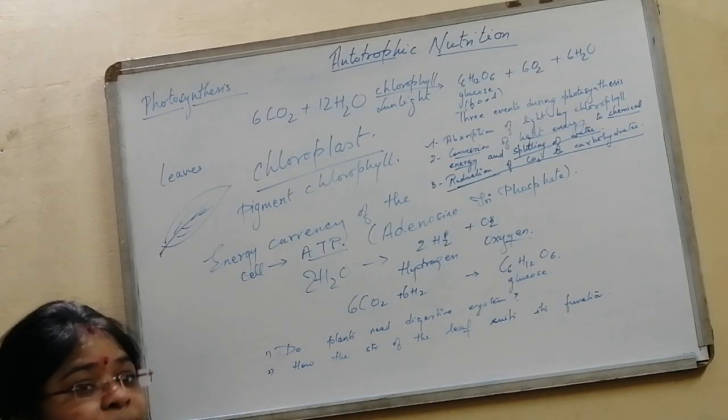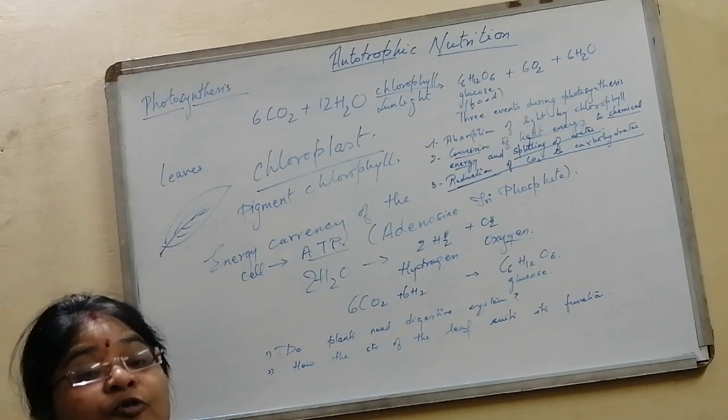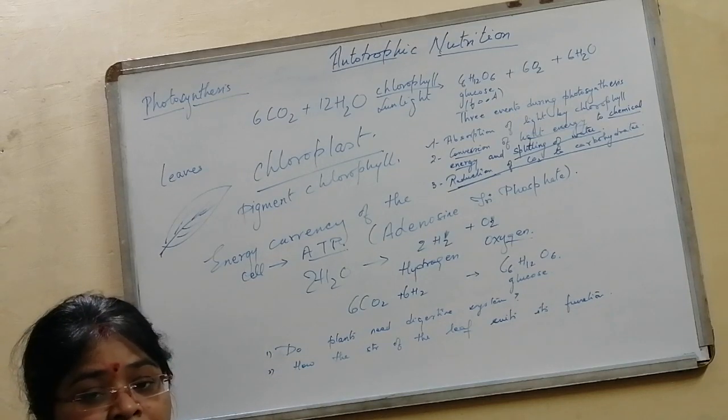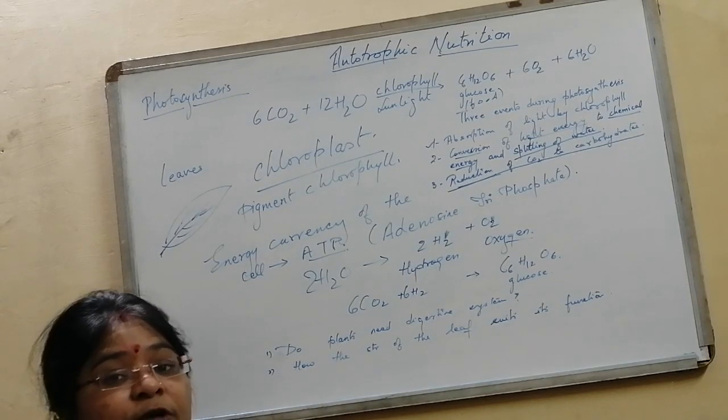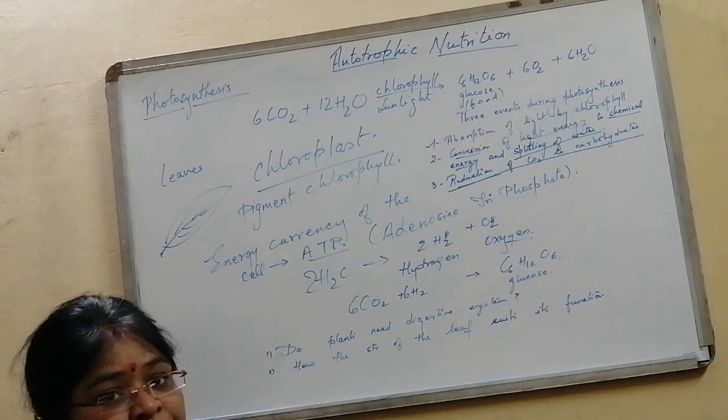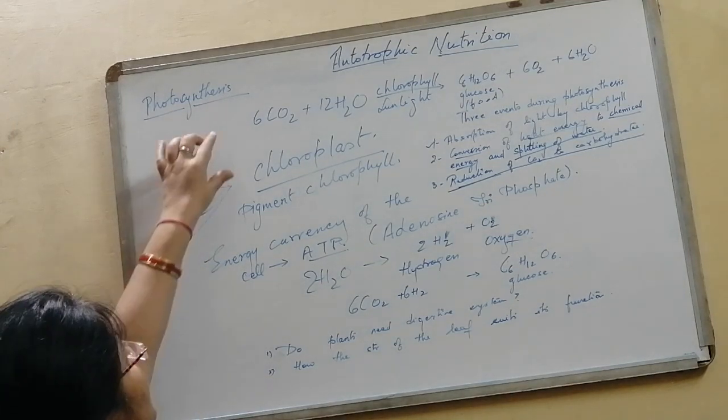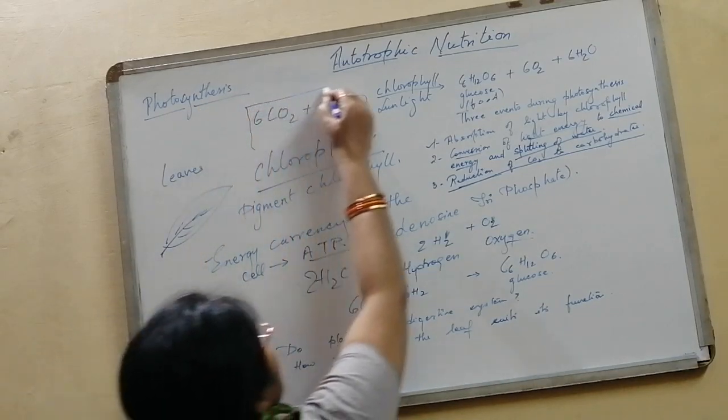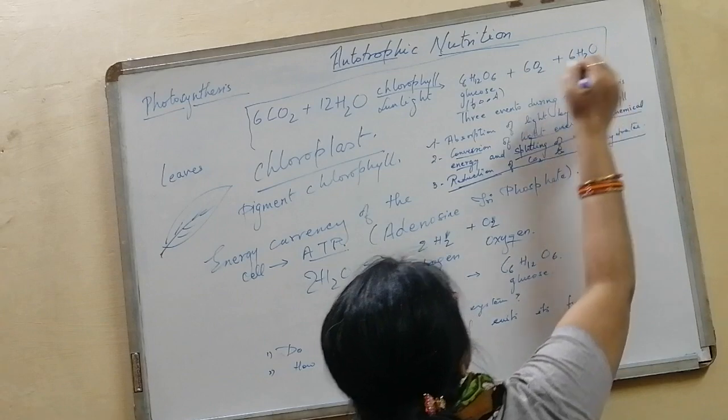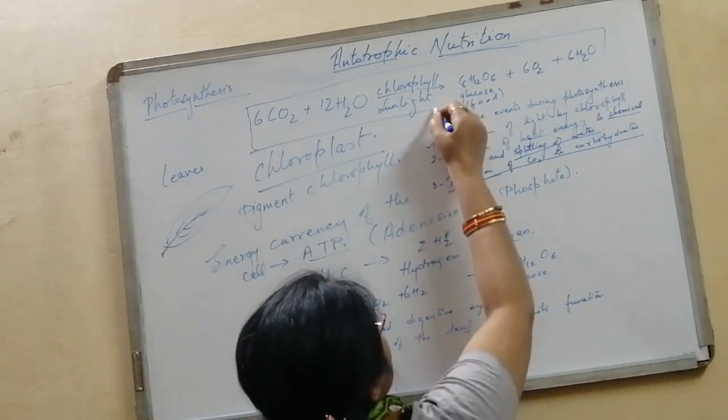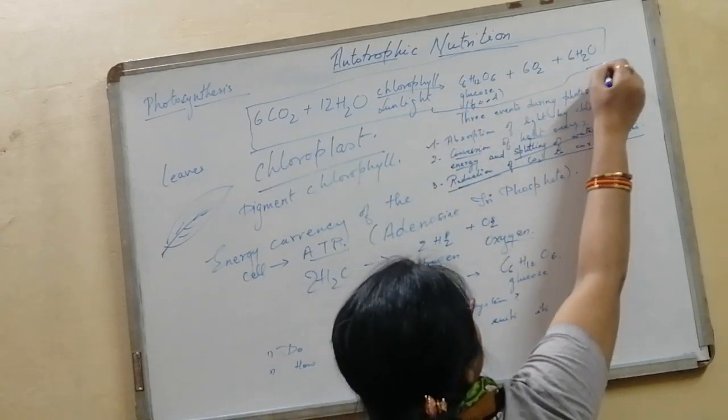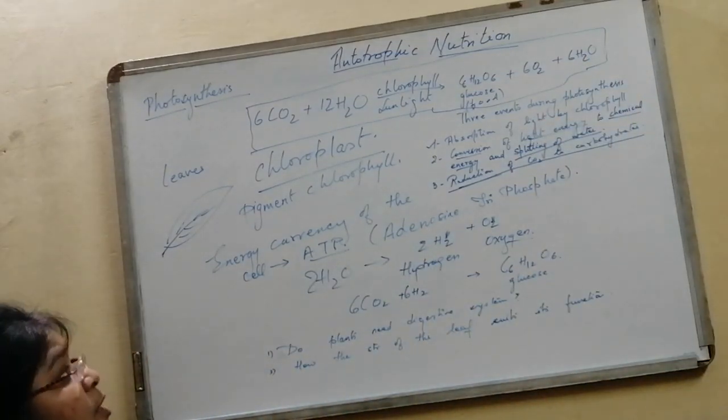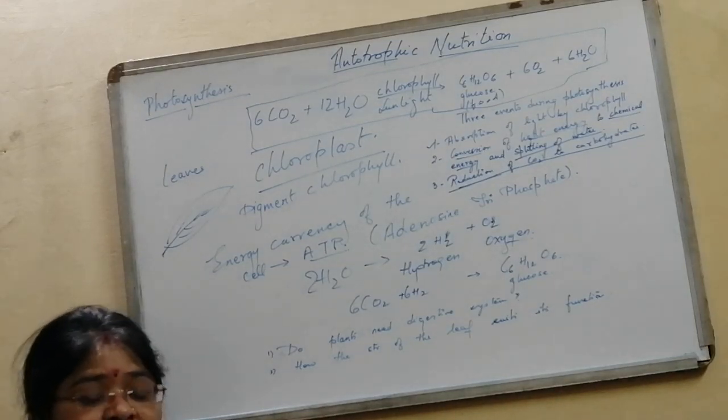Synthesis means formation. So using light, food is being formed by the plants, and therefore plants are called autotrophs. Now all of you must have seen this common equation, you must have been reading it from your childhood - that using carbon dioxide and water, plants form their food.